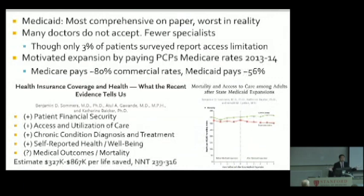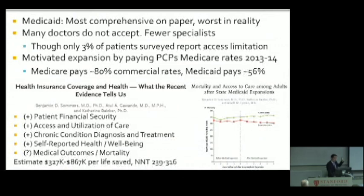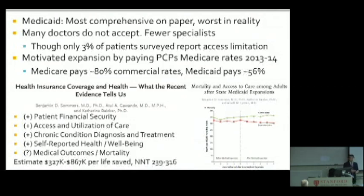Just because you have a card that says you have health insurance does not necessarily mean you have good access to high-quality health care. Medicaid is often the most comprehensive health insurance on paper but perhaps the worst in reality — because of paperwork, bureaucracy, and because payments are not very good. They'll on average pay maybe half of what a commercial insurer would, so many doctors just don't want to accept Medicaid patients. It's even tougher if you need to see a specialist, a dentist, or a psychiatrist — less than half of psychiatrists will take Medicaid patients. So does giving people Medicaid actually improve any health outcomes? What does seem clearly true is you definitely help people with protecting their financial security — people won't go bankrupt trying to get medical care.